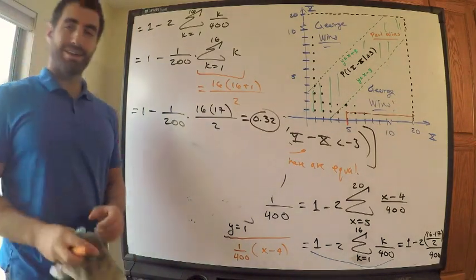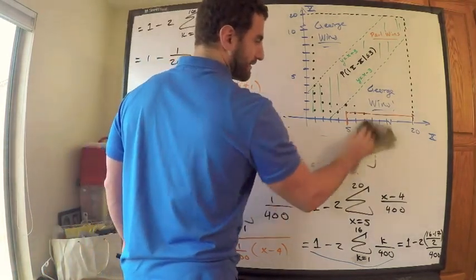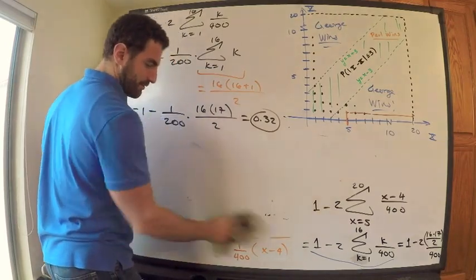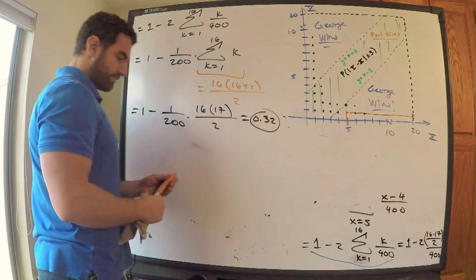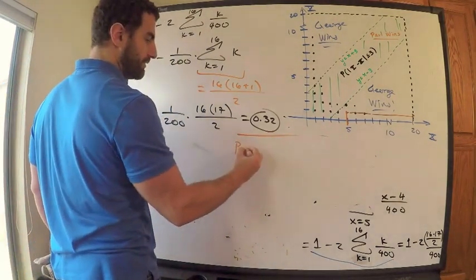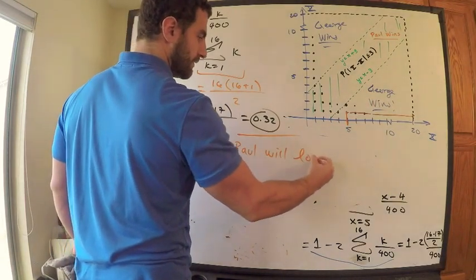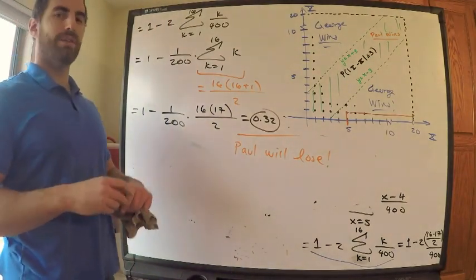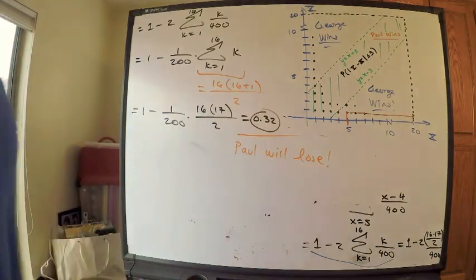Should Paul take this bet? Yes or no? Paul should not take this bet. Why should Paul not take this bet? Because what is the probability that George wins? George wins with a 68% chance. Paul will most likely lose. Alright. Comment on the video and like the video. Thank you.